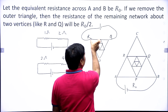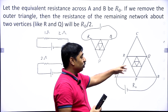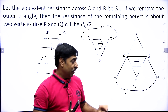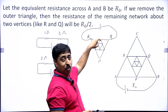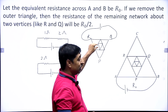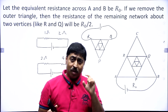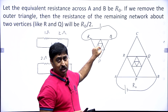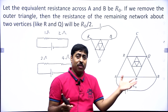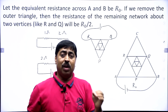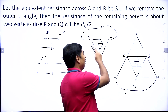If resistance is 1 ohm here, it will be half ohm in the next triangle; if half ohm there, then 1/4 ohm in the next, and so on. So actually these two circuits — original and with outer triangle removed — are the same, with one and only one difference: every resistance in the inner circuit is exactly half of the corresponding resistance in the full circuit. So if the equivalent of the full circuit is R₀, the equivalent across R and Q is R₀/2.